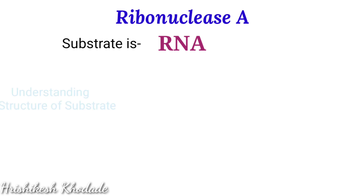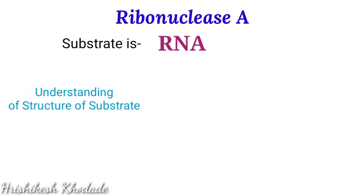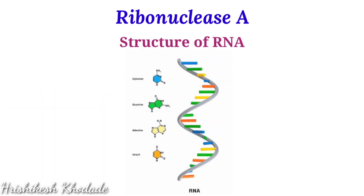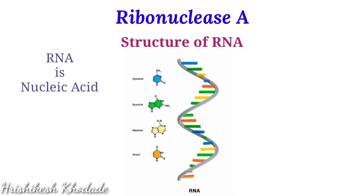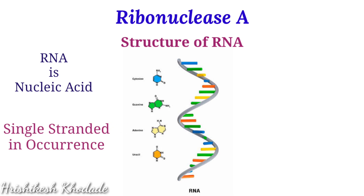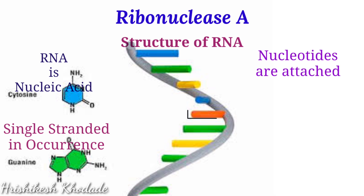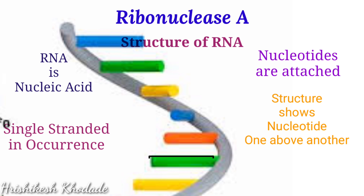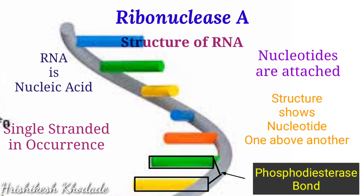It is very essential to know about the structure of the substrate in order to understand the enzymatic mechanism. RNA is a nucleic acid which is always single-stranded. Nucleotides are attached together, so the structure looks like nucleotides joined in one line by bonds between two nucleotides, which is called a phosphodiester bond.